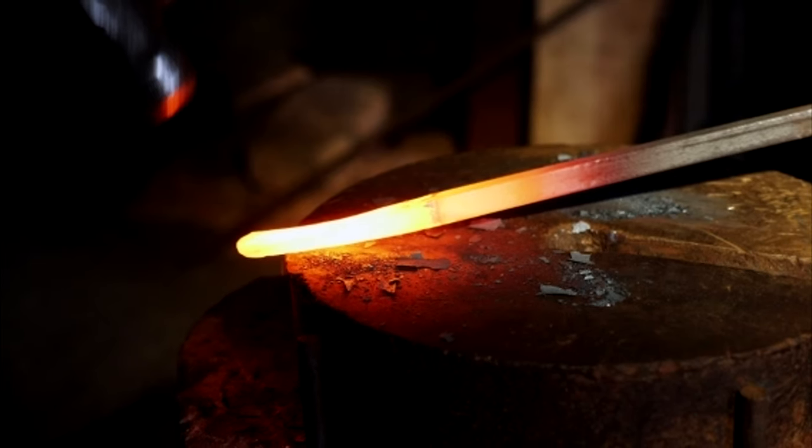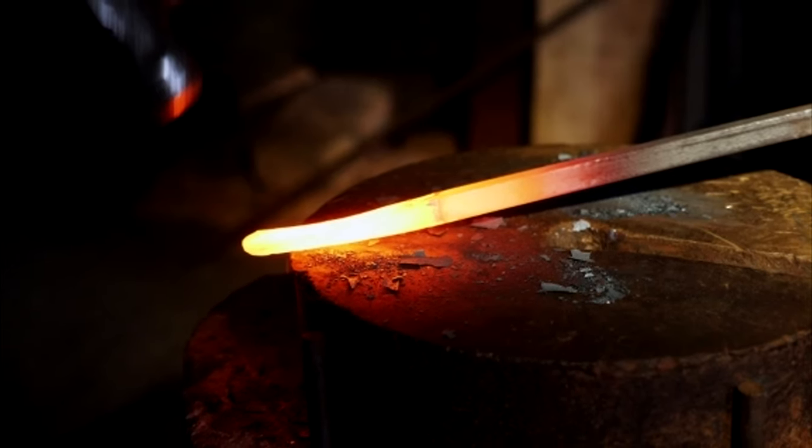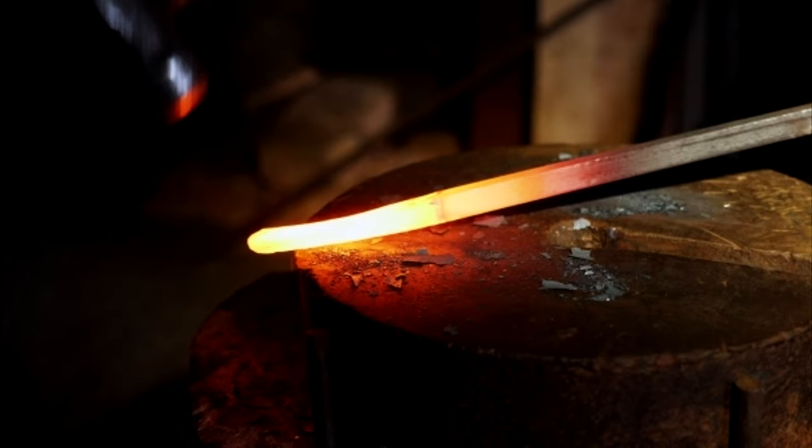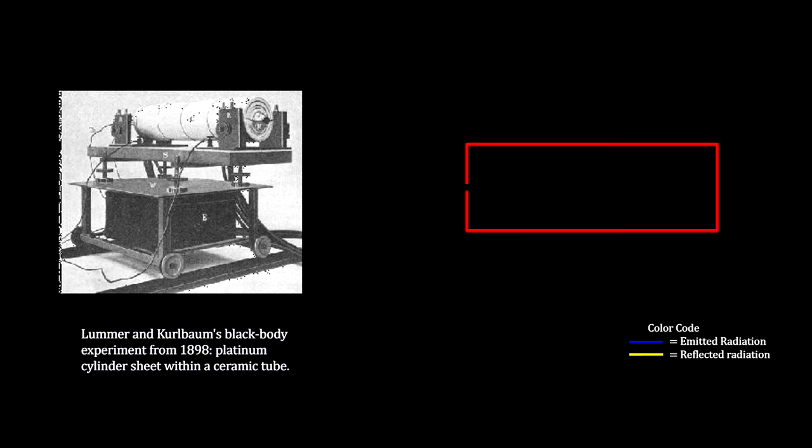Such a body is called a black body, and its radiation is called black body radiation. Here's an example of an early construction of such a device. It's a closed container with platinum interior walls and a small hole at one end. The ceramic exterior keeps the temperature constant throughout the device.